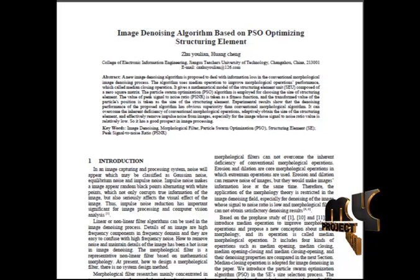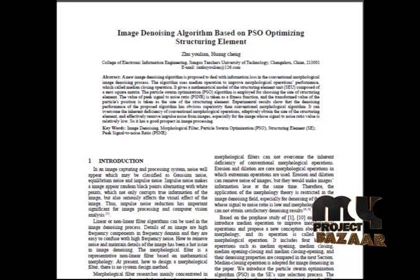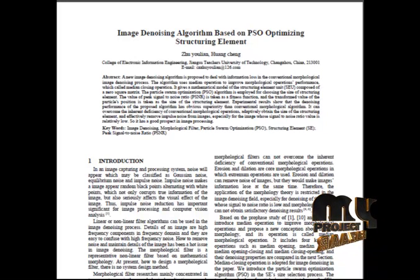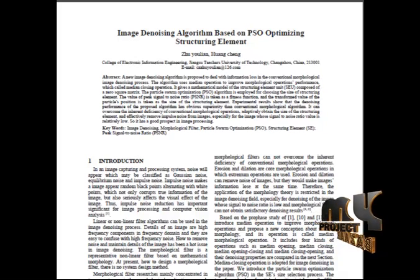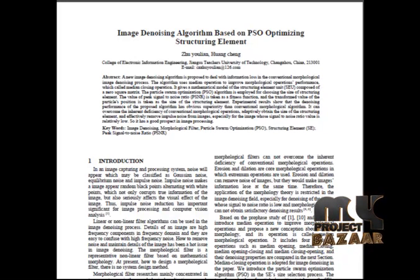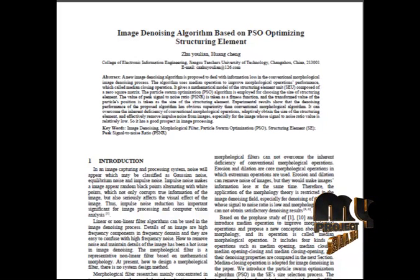In pre-processing, we change the image format from TIFF to PNG, then we rescale the image. The pre-processed image is passed to the denoising process. Initially, we generate noise to the image, which is used to deal with information loss in the conventional morphological image denoising process. The algorithm uses a median operation to improve morphological operations performance, which is called the median closing operation.